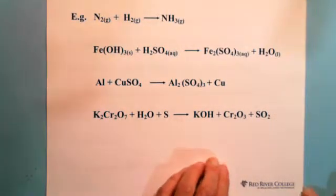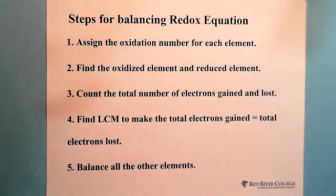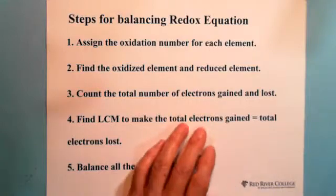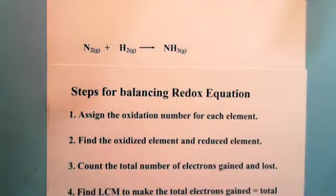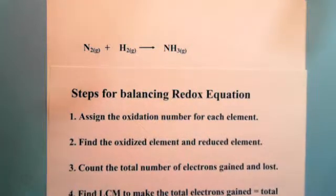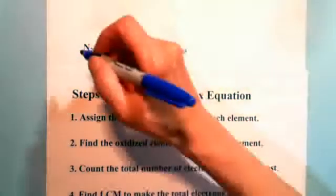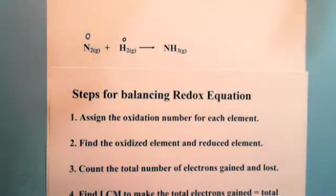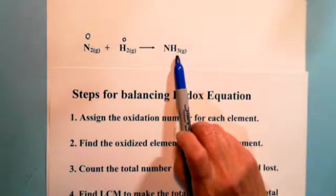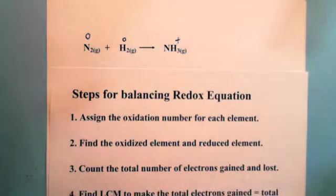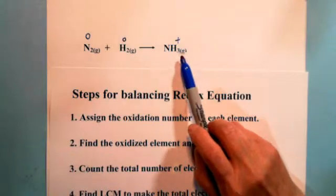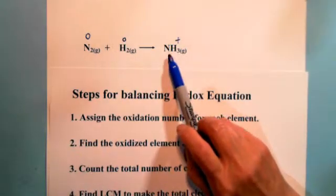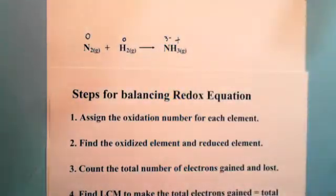Let's try to balance these types of equations. There are five steps to follow. Step one: assign the oxidation number for each element. For example, with nitrogen and hydrogen: before reaction, N₂ is zero charge and H₂ is zero charge. After reaction they become the compound NH₃ — hydrogen is always positive one, so with three hydrogens the total is positive three, and nitrogen is negative three.